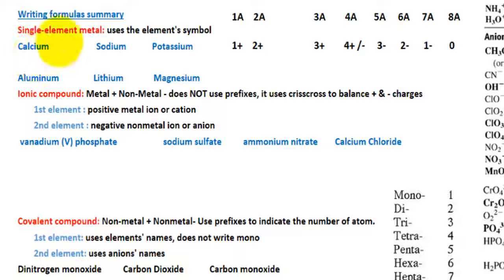For instance, we have calcium. The element symbol for calcium is Ca, so the formula for calcium is also Ca. Sodium is Na. Potassium is K. Aluminum is Al. Lithium is Li. Magnesium is Mg.